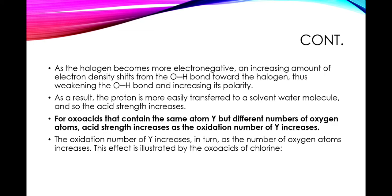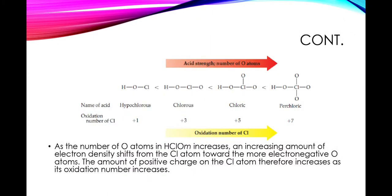For oxyacids that contain the same atom Y but different numbers of oxygen atoms, acid strength increases as the oxidation number of Y increases. The oxidation number of Y increases in turn as the number of oxygen atoms increases. This effect is illustrated by the oxyacids of chlorine. Here you can see hypochlorous, chlorous, chloric, and perchloric. An oxygen atom increases by one each time. For example, in hypochlorous you have one oxygen, in chlorous two, in chloric three, and in perchloric there are four. And similarly, the oxidation state of chlorine, the oxidation number of chlorine, also increases. It goes from +1 to +7.